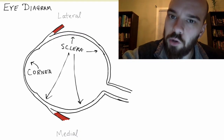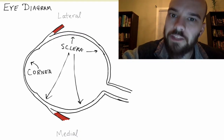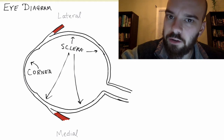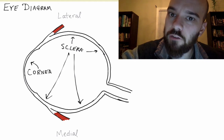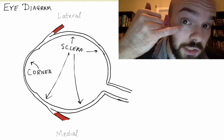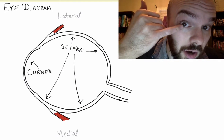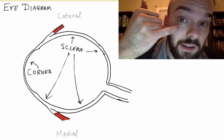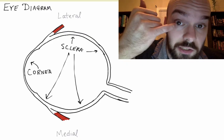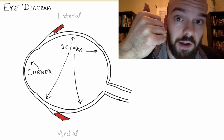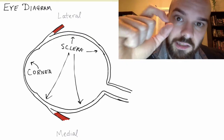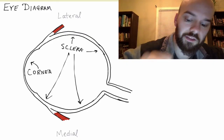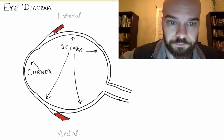You also have the cornea. That's a clear layer that goes in front of the pupil, which is the dark part of the eye, the black circle, and the colored part of your eye. There's a clear layer in front of that — that's the cornea.